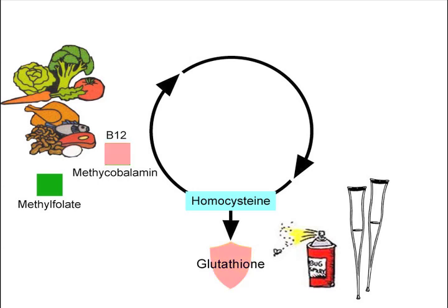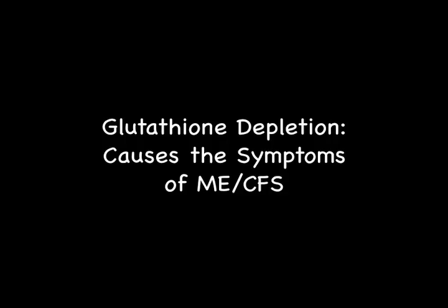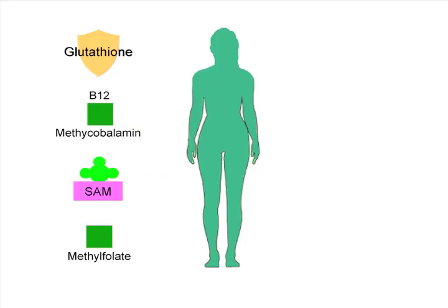Glutathione depletion and the partial methylation block form a vicious cycle, and this vicious cycle becomes chronic. This vicious cycle is the reason ME/CFS is a chronic condition. Most of the various biochemical abnormalities and symptoms of ME/CFS result from glutathione depletion, the functional deficiency of vitamin B12, the methylation deficit, and low intracellular folate.